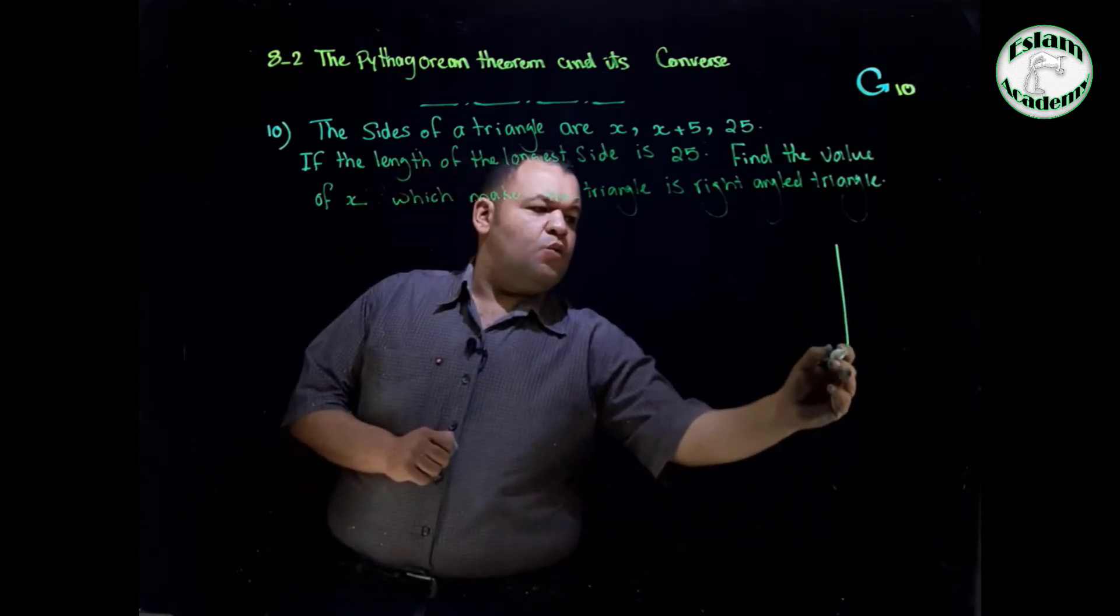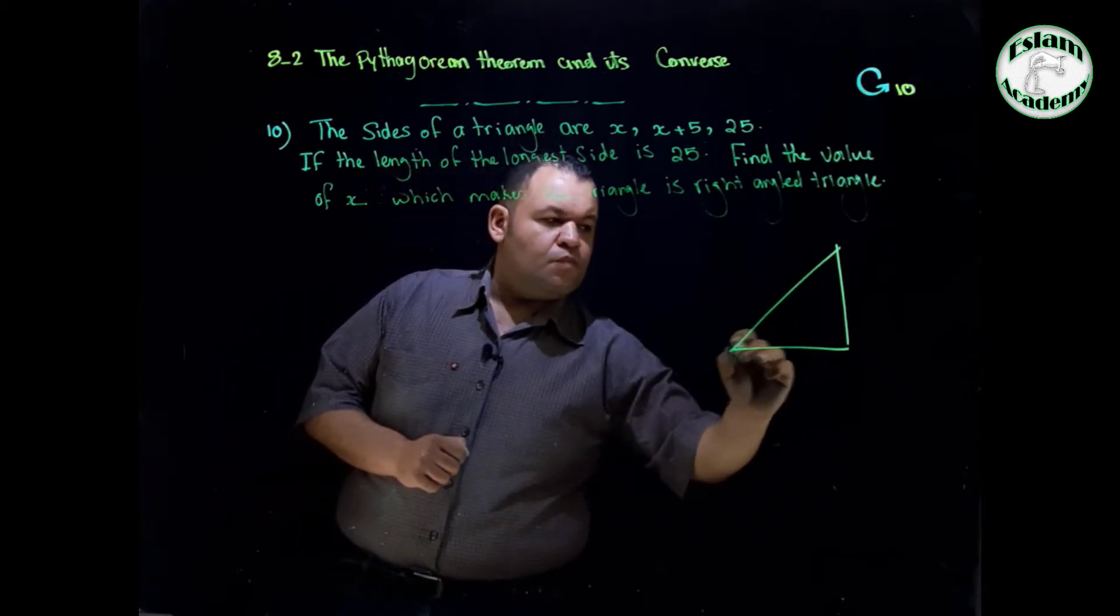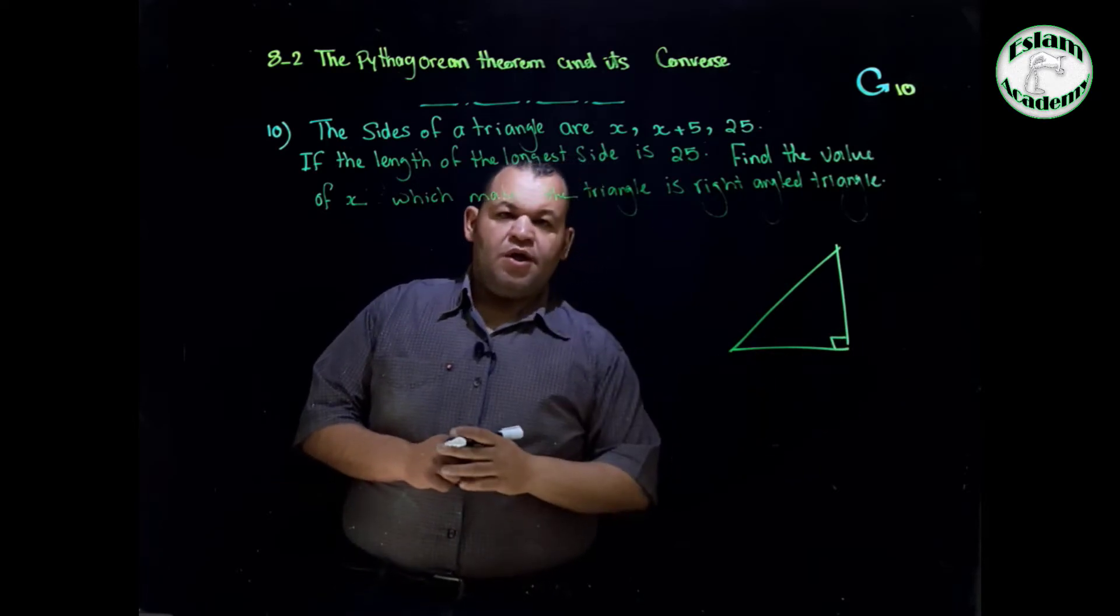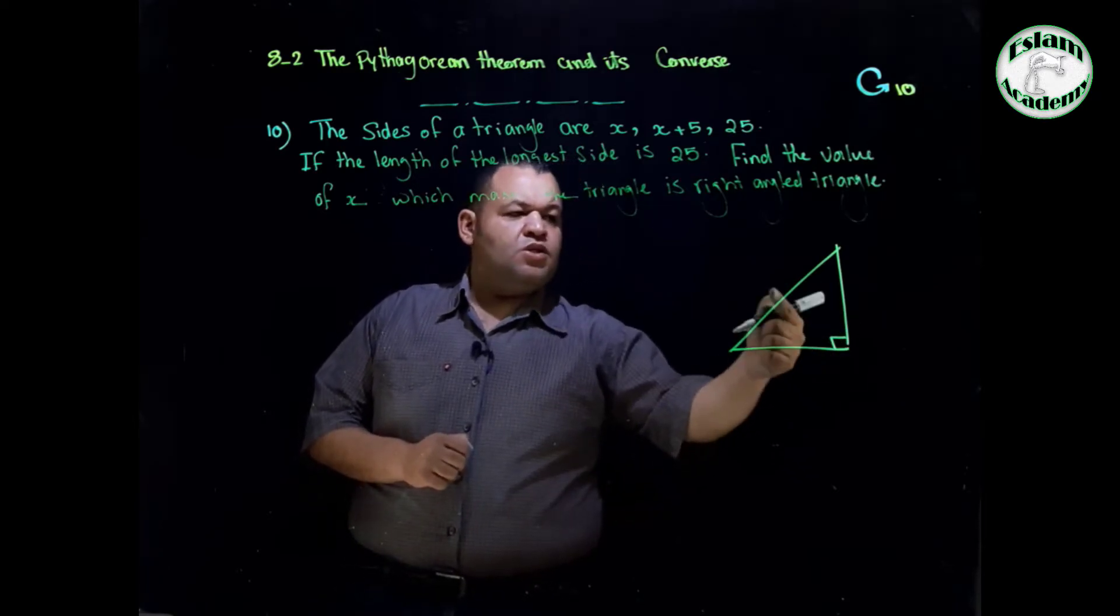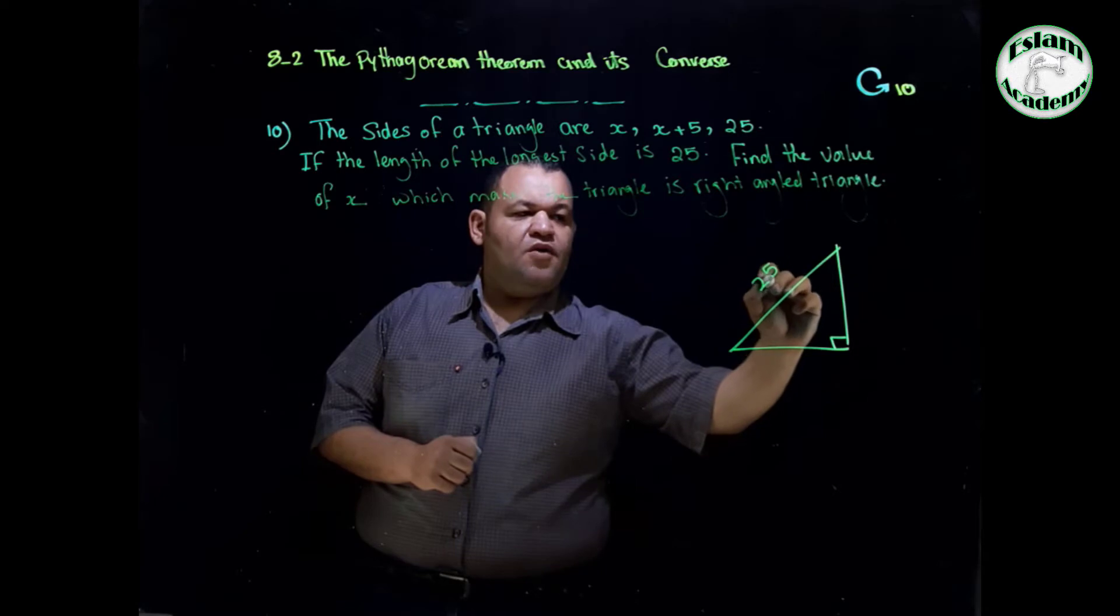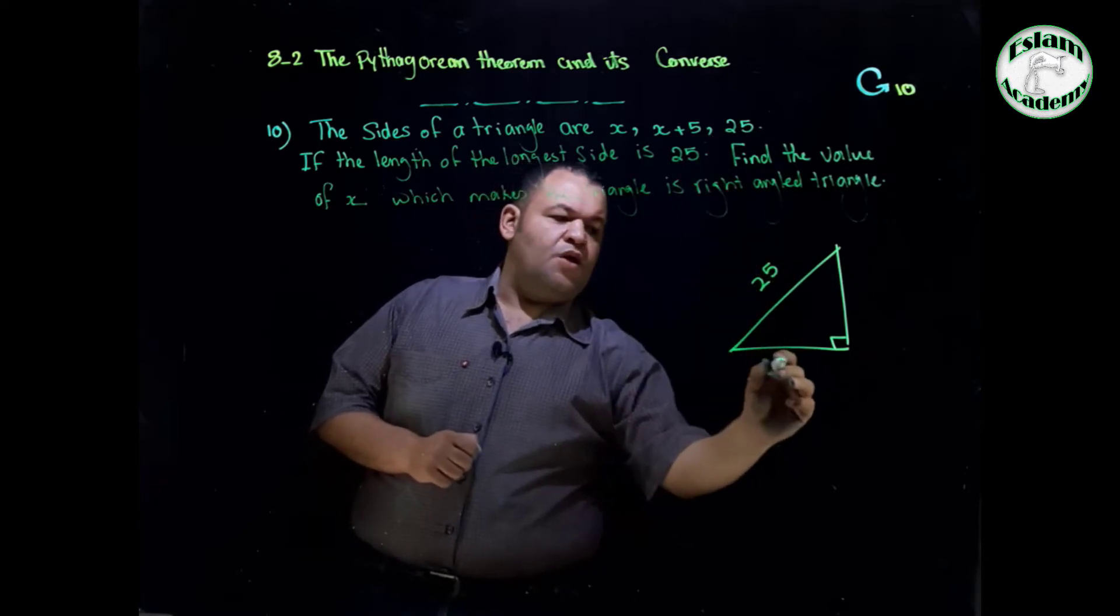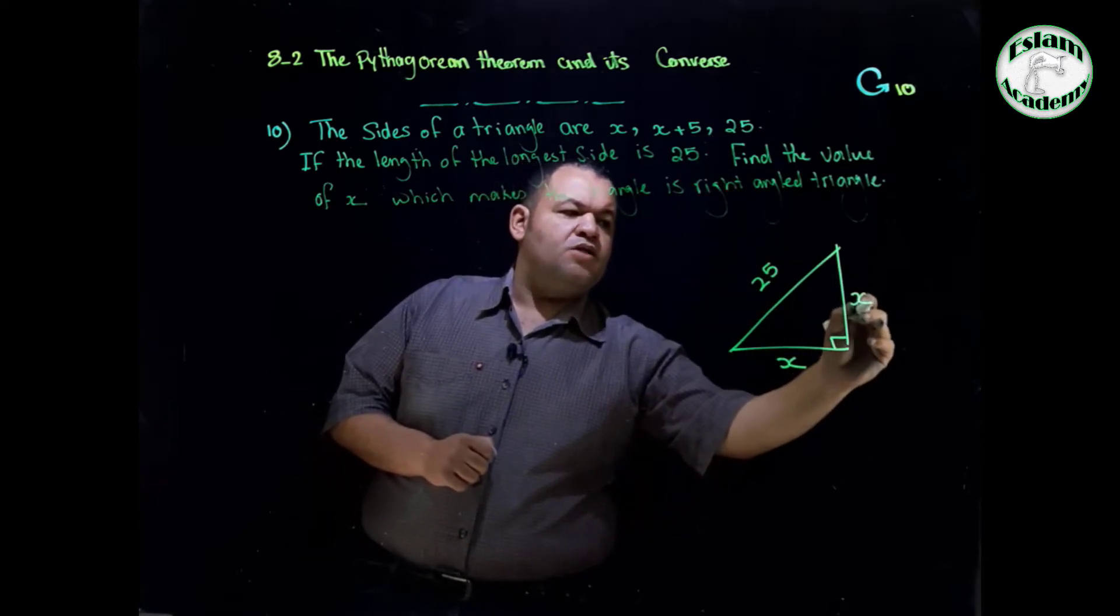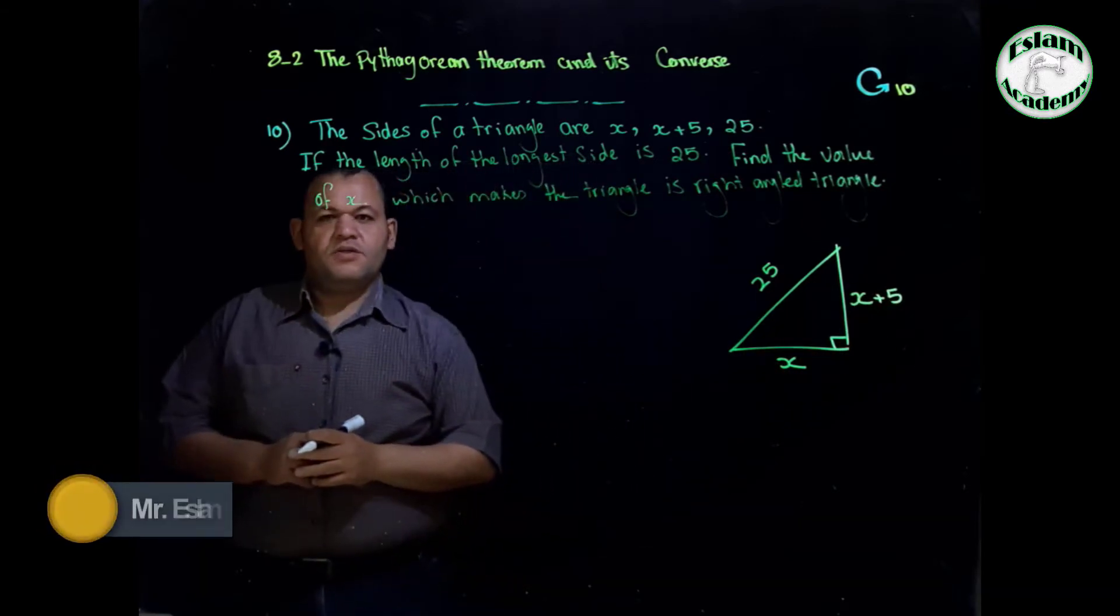Now the easy way is we can draw the triangle. That's a right angle triangle and the longest side is the hypotenuse which equals 25. One of the legs will be x, the other leg will be x plus 5. We need to find the value of x.